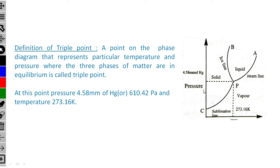At one point on the diagram, the pressure and temperature coincide — this is the triple point where the three phases meet. Here, water is available in three phases: solid, liquid, and vapor. These three phases coexist at the triple point of water.